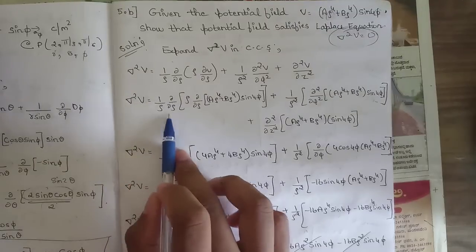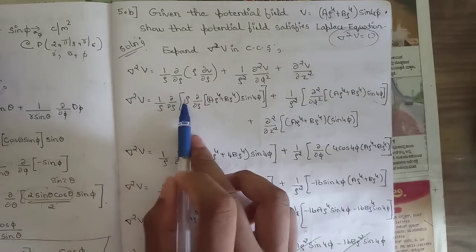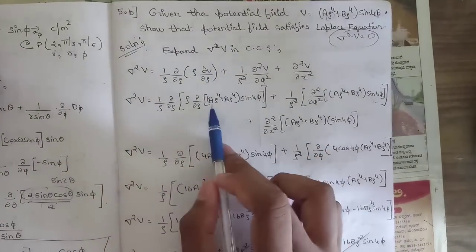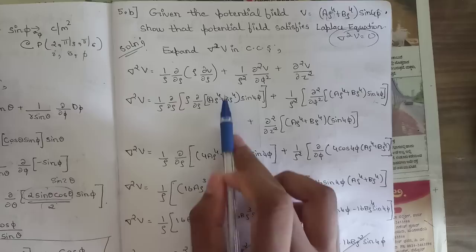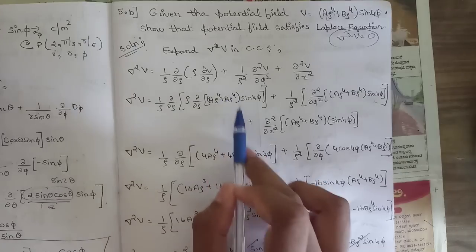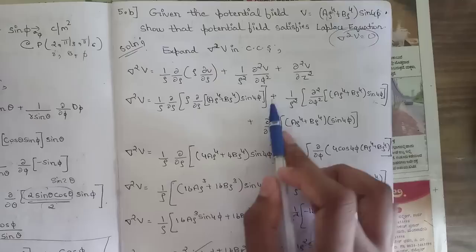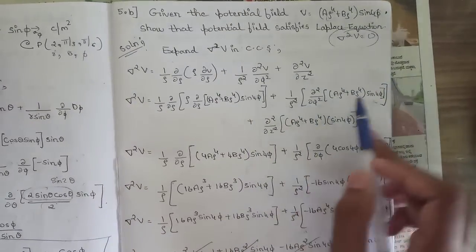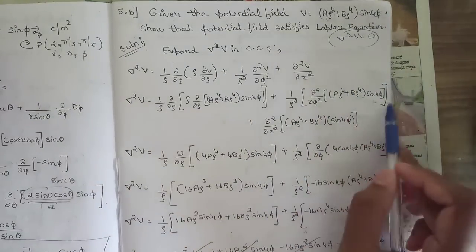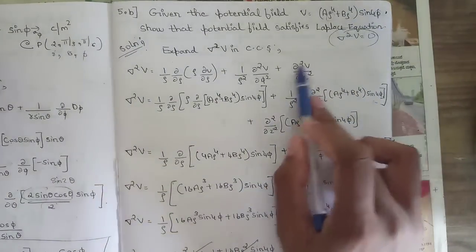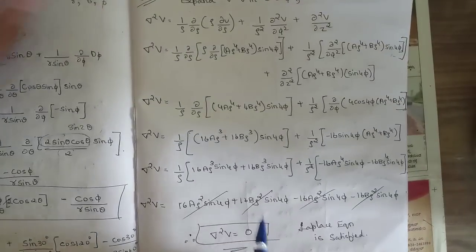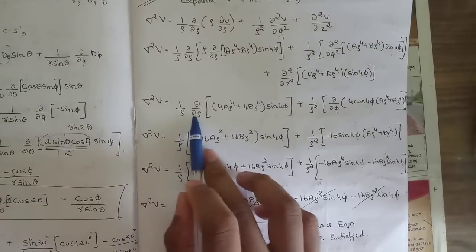So ∇²V = (1/ρ)(∂/∂ρ)(ρ ∂/∂ρ) of V — substituting V = aρ⁴ + bρ⁴ sin4φ — plus (1/ρ²)(∂²V/∂φ²) plus (∂²V/∂z²).